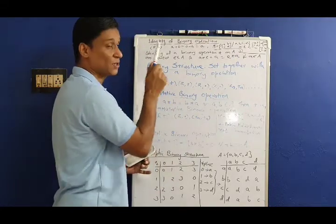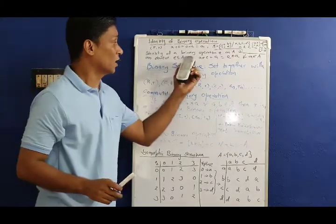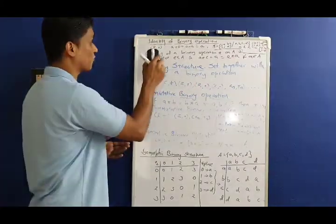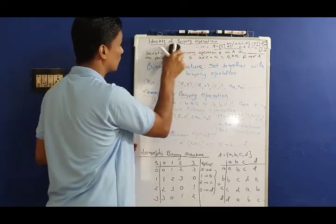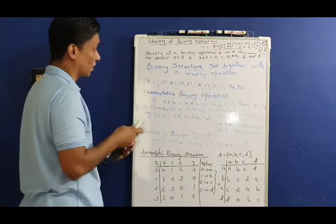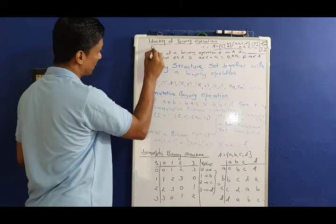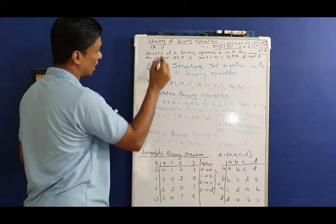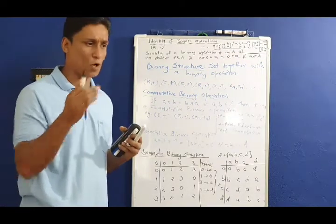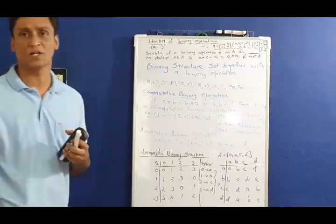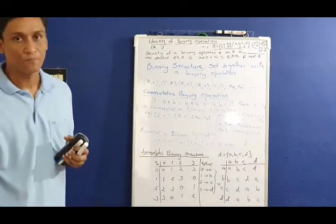The set of real numbers under multiplication is also a binary structure. Consider R under dot (multiplication). Multiplication on the set of real numbers is a binary operation.